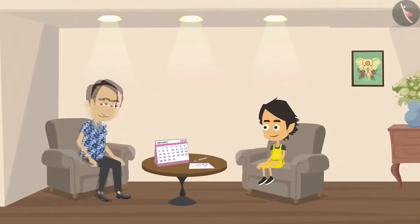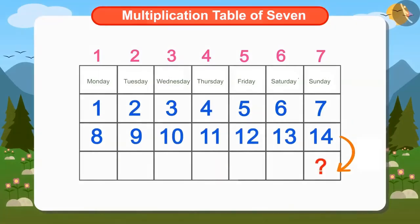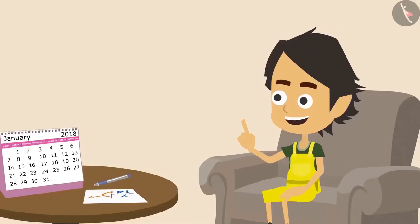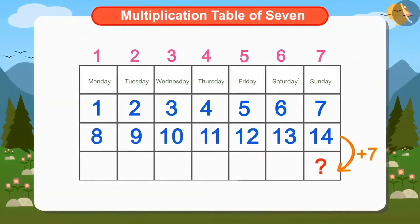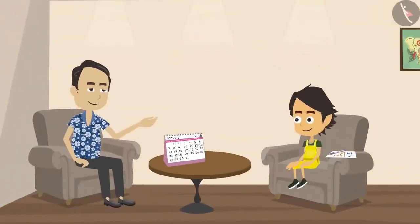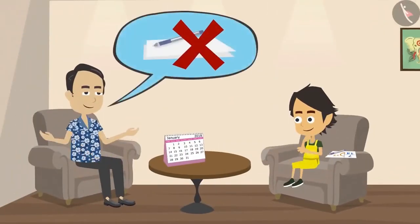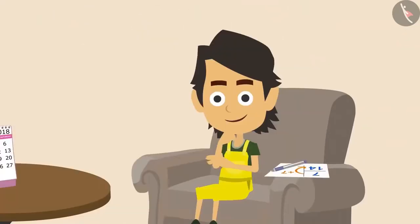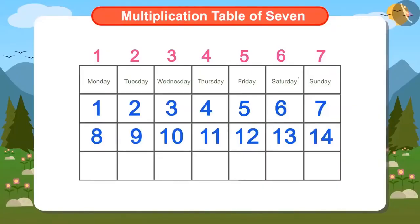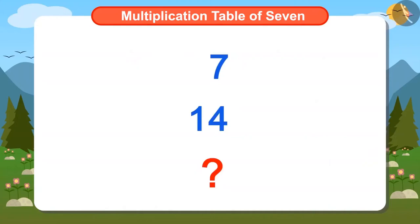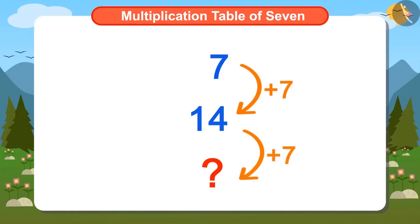Papa complimented Ayushman and further asked what date would it be on the following Sunday after 14th. Ayushman has understood how to find the answer: he has to add 7 to 14. But Papa stops him and wants Ayushman to answer this question without paper and pen. Ayushman remembered that he had done such a calculation earlier too. We have done this kind of calculation while learning multiplication tables.